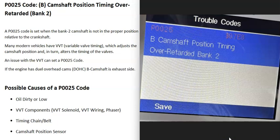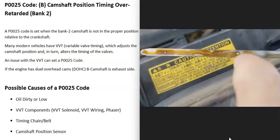What are some possible causes of a P0025 code? The first thing that could cause this is really dirty or low engine oil. The first thing to do is go check your oil — make sure it doesn't look really dirty and doesn't look low — because dirty or low engine oil can cause this problem.